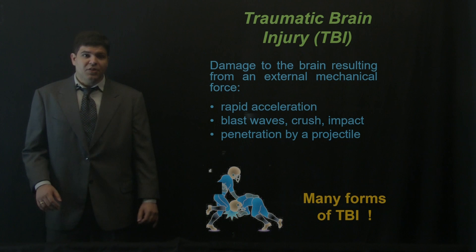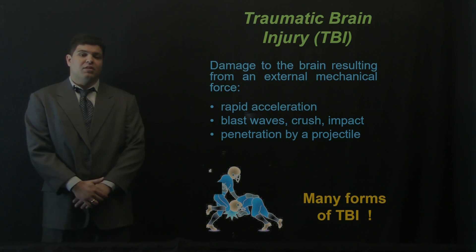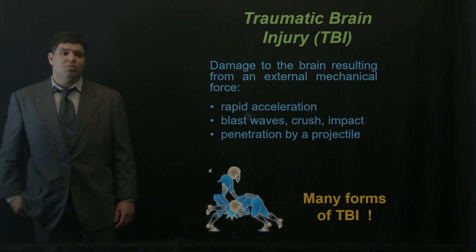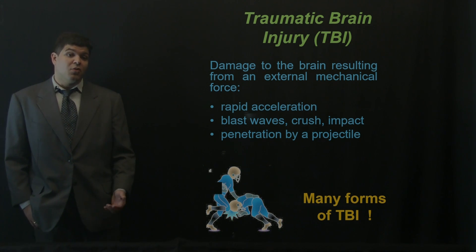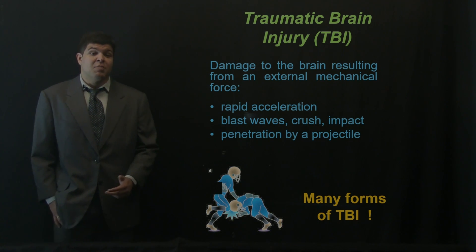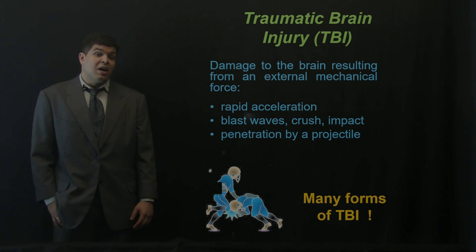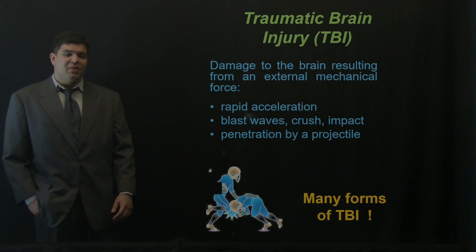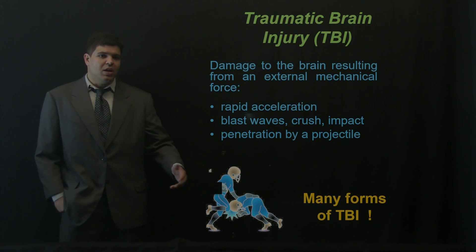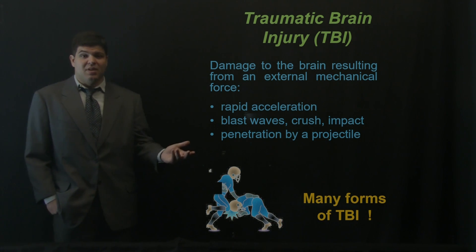Let's start with traumatic brain injury. Traumatic brain injury can be roughly defined as damage to the brain resulting from an external mechanical force. It can happen due to rapid acceleration of the head, blast waves, crush impact, penetration by a projectile, or concussions in contact sports. There are many forms of TBI, and the pathologies that arise following traumatic brain injuries are very different depending on the type of TBI.